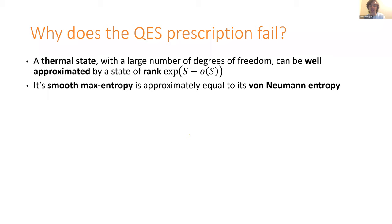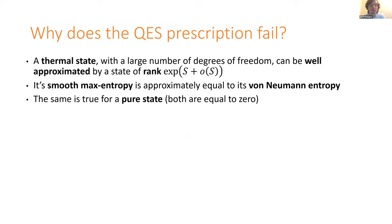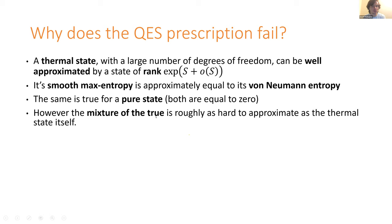The same is true for a pure state with zero von Neumann entropy — it's a rank-one state, so its smooth max entropy is also zero. However, if we take a mixture of the two, then trying to approximate that mixture with high accuracy is basically as hard as approximating the thermal state itself. If you have something very close to a mixture of a pure and a thermal state, it can necessarily be written as a sum of something close to the pure state and something close to the thermal state — both of which can't have smaller rank.